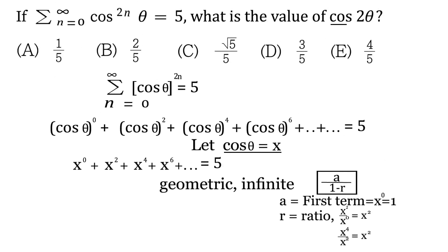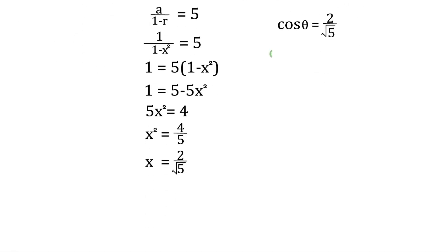They want us to figure out cos 2 theta. It'd be nice if they only wanted cos theta, but they decided to make it a little bit more challenging and say cos 2 theta is what they want us to figure out. So how do we do this now?